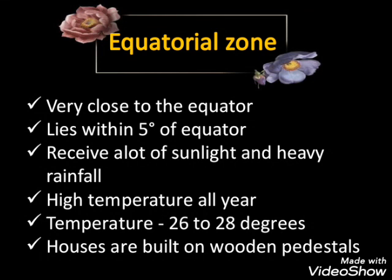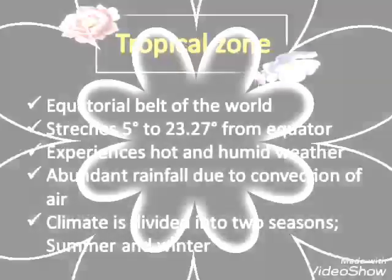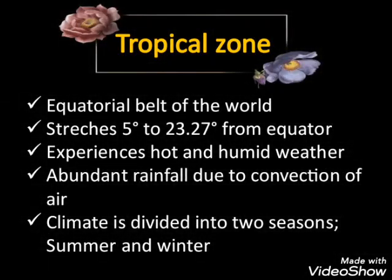The equatorial zone receives heavy rainfall. Many houses are built on wooden pedestals to keep them safe from flooding. This region experiences high temperature all year around, with average monthly temperatures of about 26 to 28 degrees Celsius.